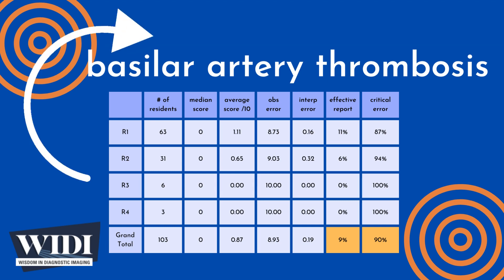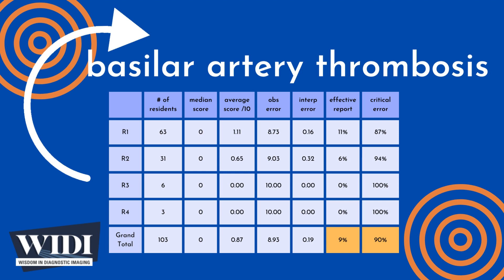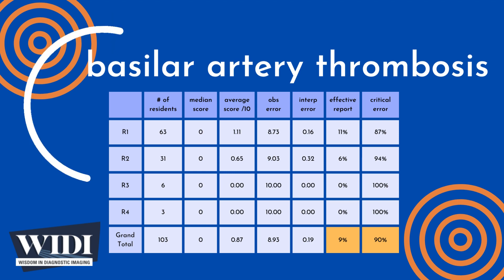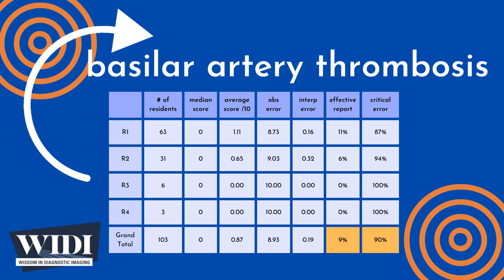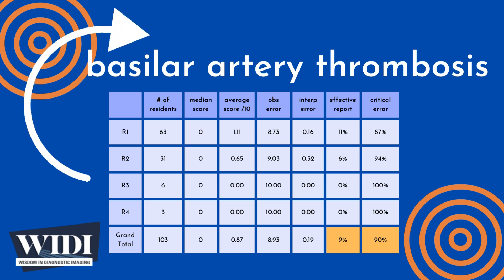In this most missed case, 9% of residents produced effective reports. We define a report having a critical error to be one with scores between 0 and 2 — in terms of letter grades, this would be F and D. In this most missed case, 90% of residents produced reports with critical errors.